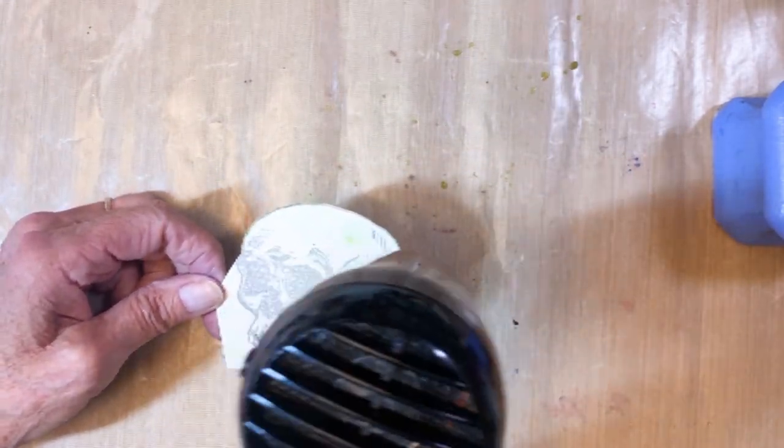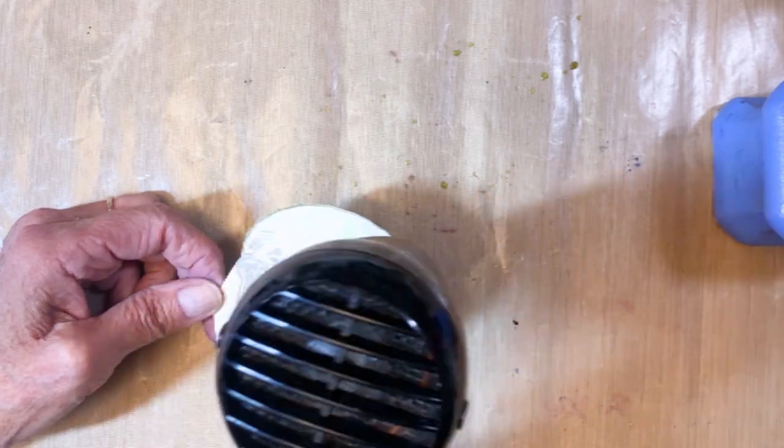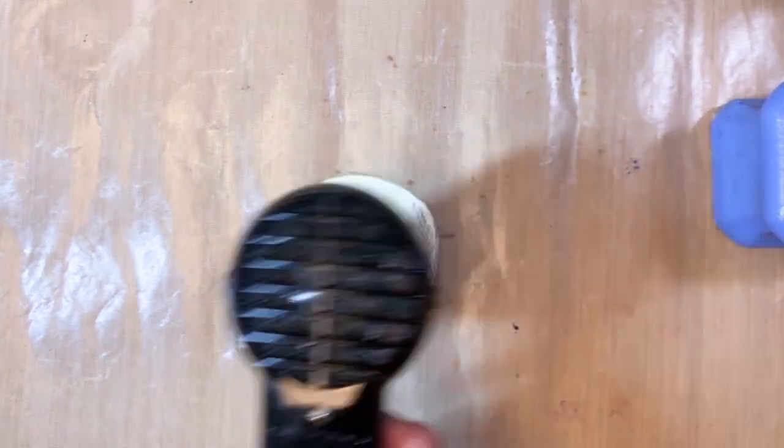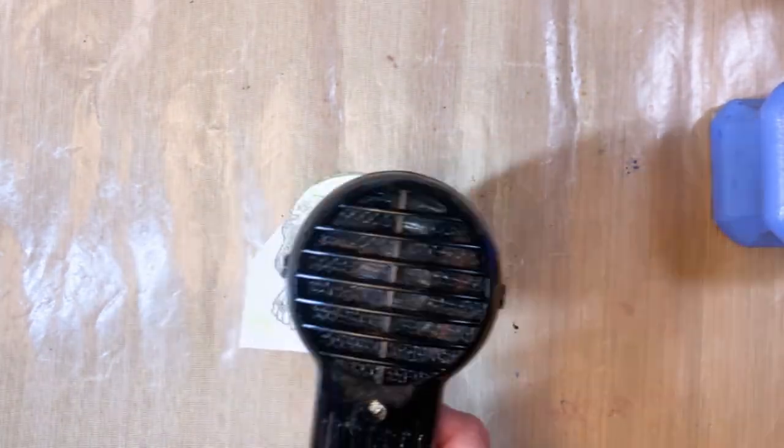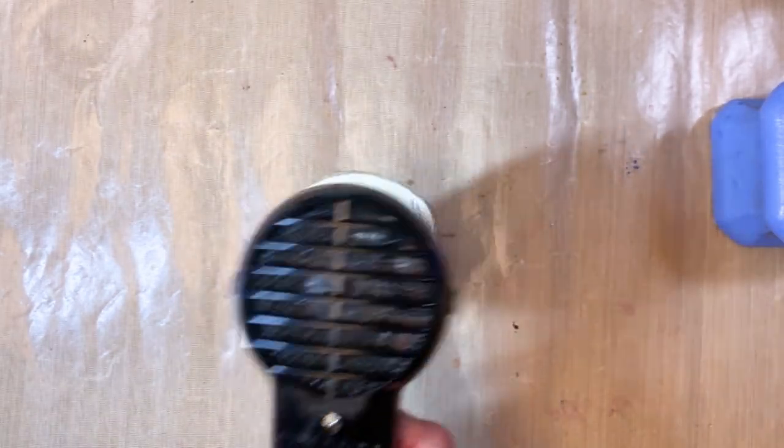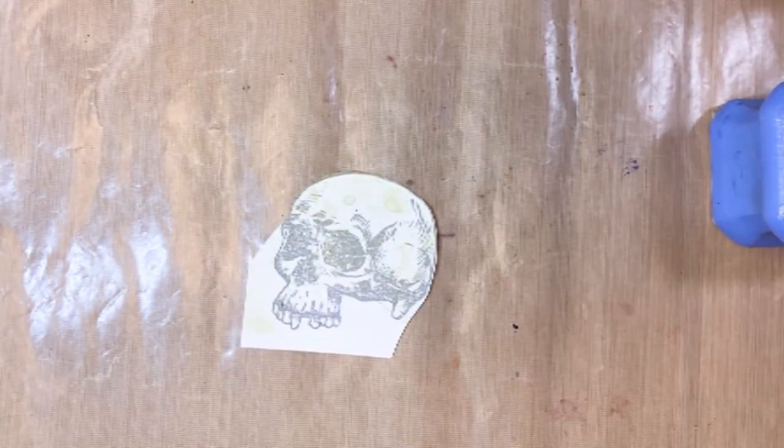After I stenciled the shattered looking stencil on top, I decided to go ahead and coat the whole thing in just the hickory smoke distressing, kind of ink blended around the edges. And you'll see me do that in a little bit.